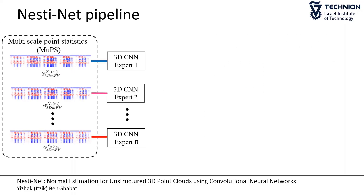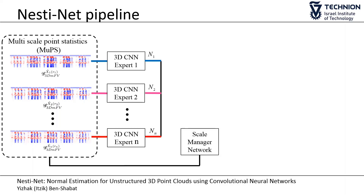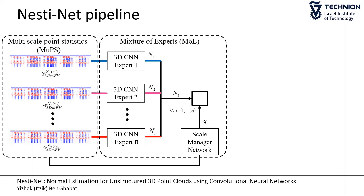We then feed each scale into a different 3D CNN expert network to estimate the point normal. In order to estimate which expert estimates the normal most accurately, we feed the entire MOOPS representation into a scale manager network, which outputs a value correlated to the probability of each expert to predict the correct normal. This is a mixture of experts network.